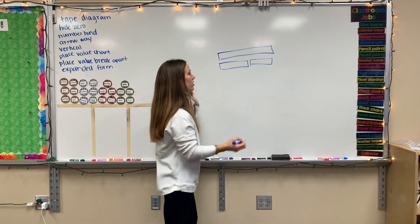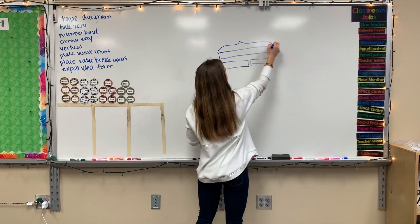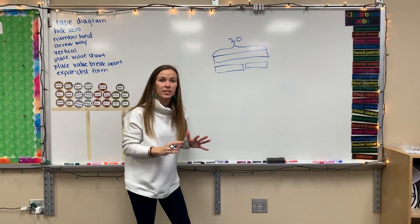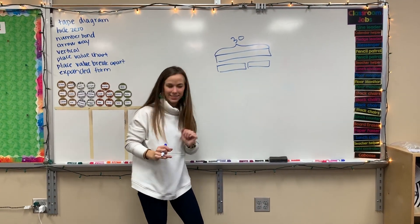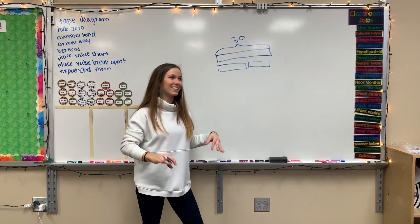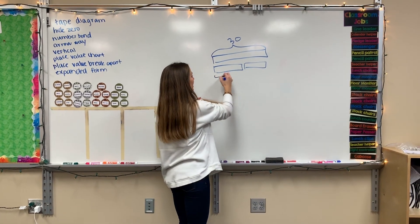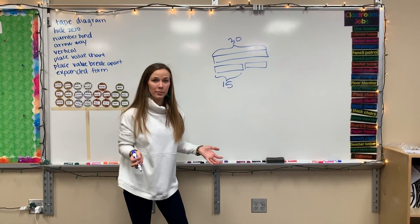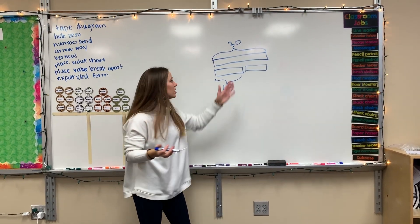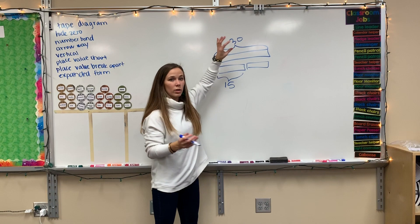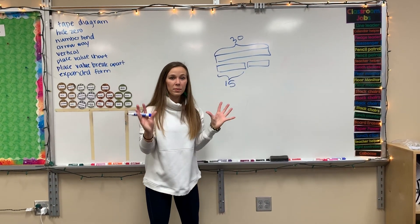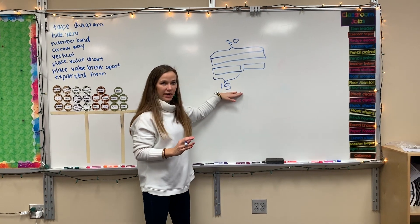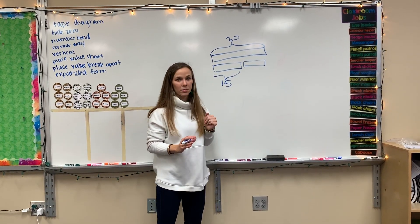So maybe we have thirty bananas in all. We know that total they have thirty pieces. They give away fifteen bananas, and then we want to know how many bananas do they still have. You could look at it where what I started with — the biggest number — is my whole, and then if I have some that I gave away, how can I find the missing number?